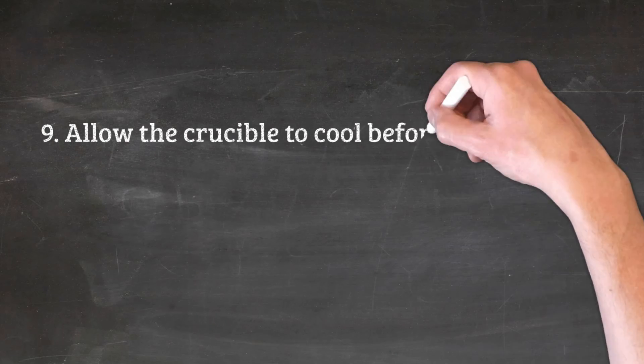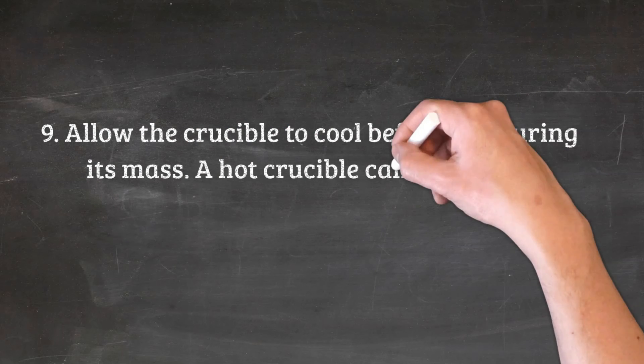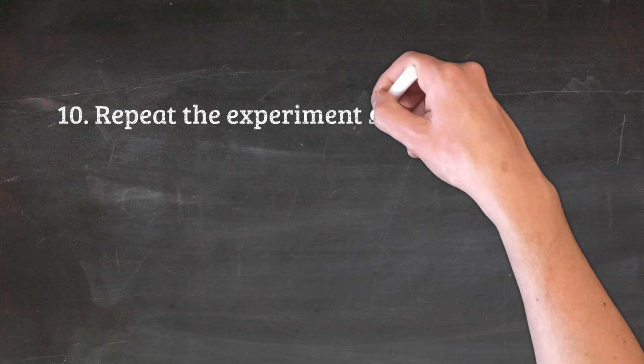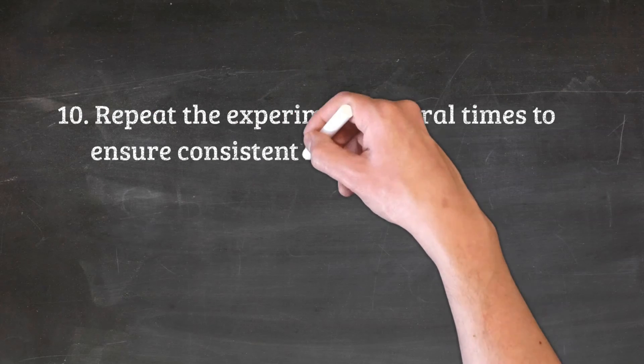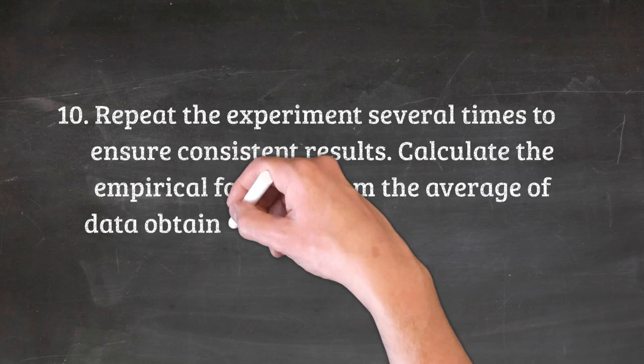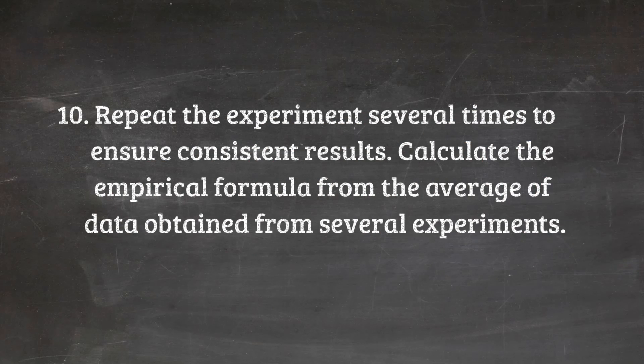9. Allow the crucible to cool before measuring its mass. A hot crucible can damage the electronic balance. 10. Repeat the experiment several times to ensure consistent results. Calculate the empirical formula from the average of data obtained from several experiments.